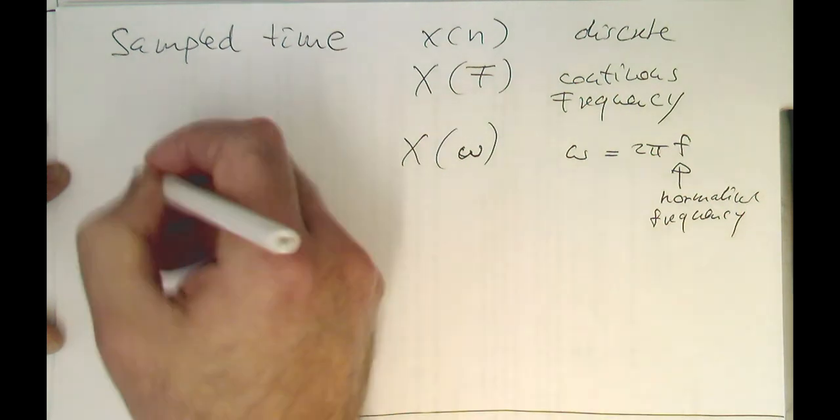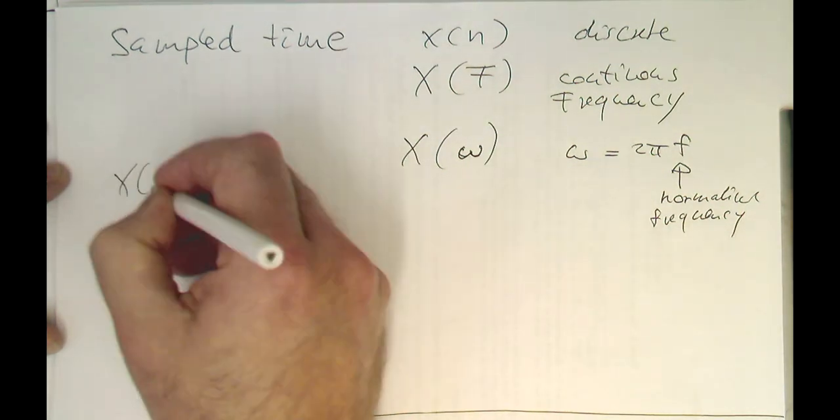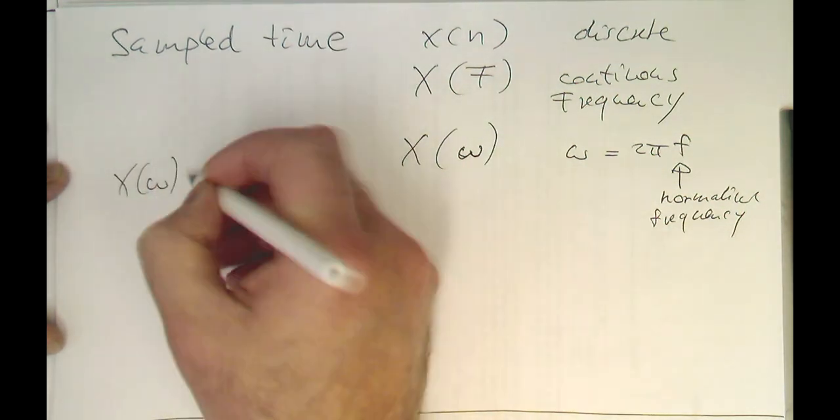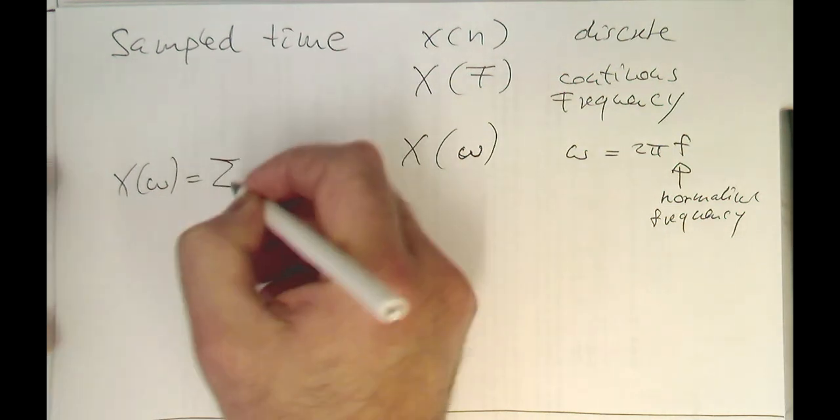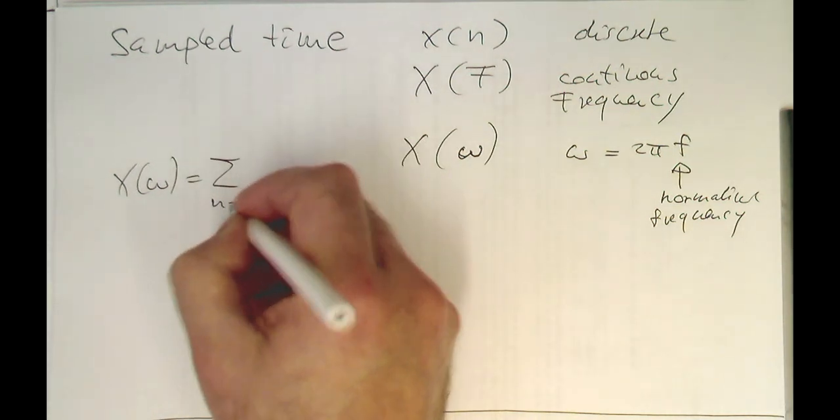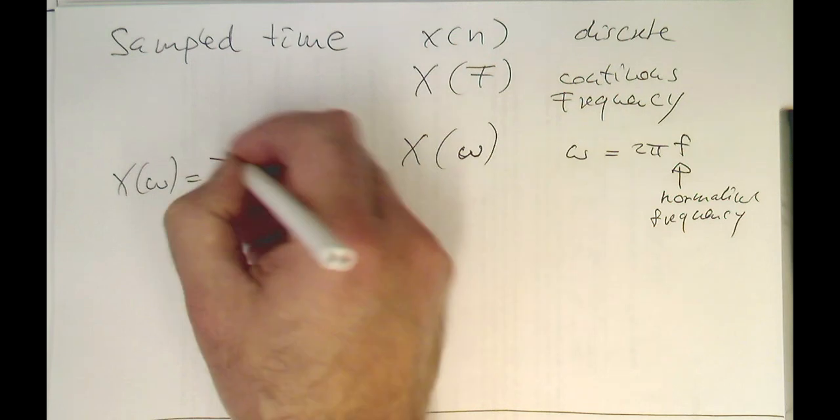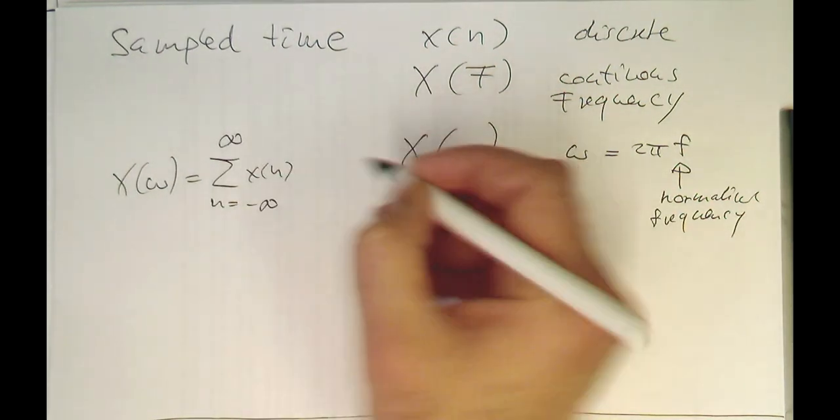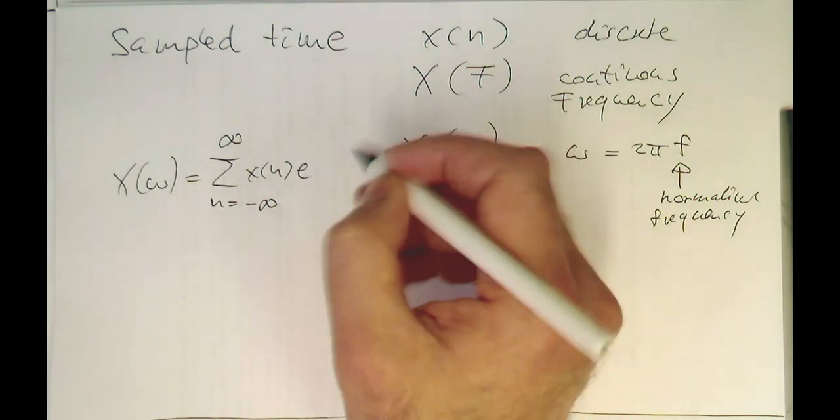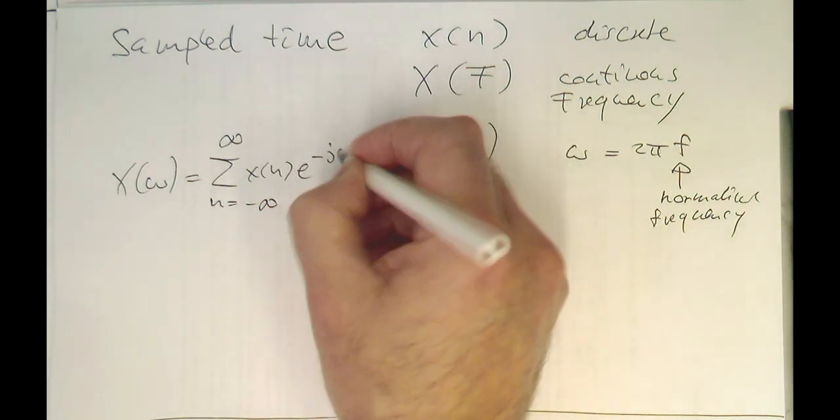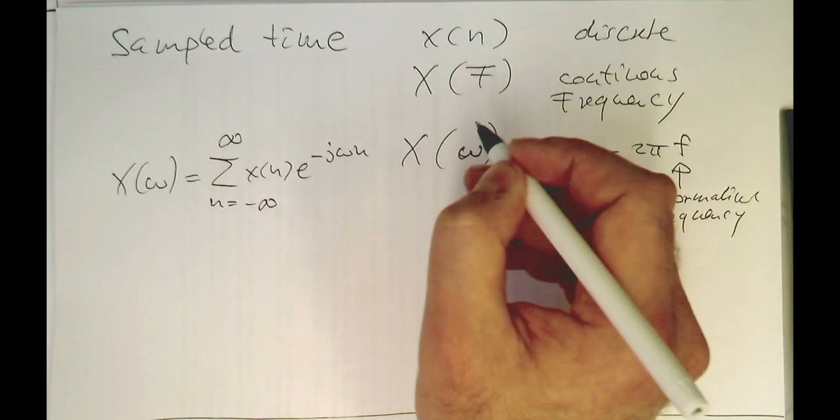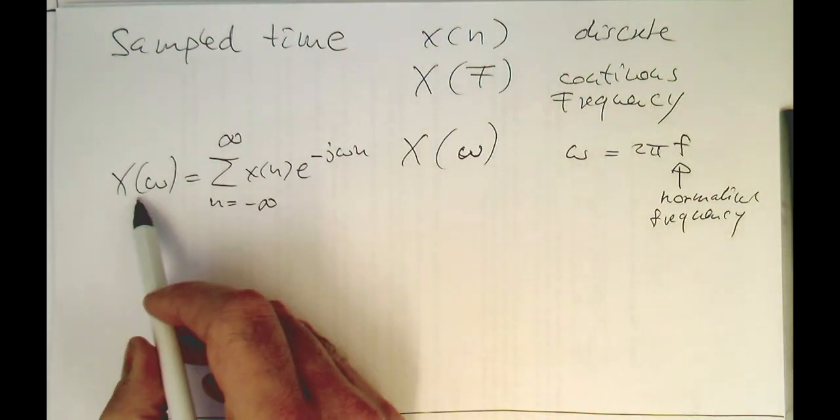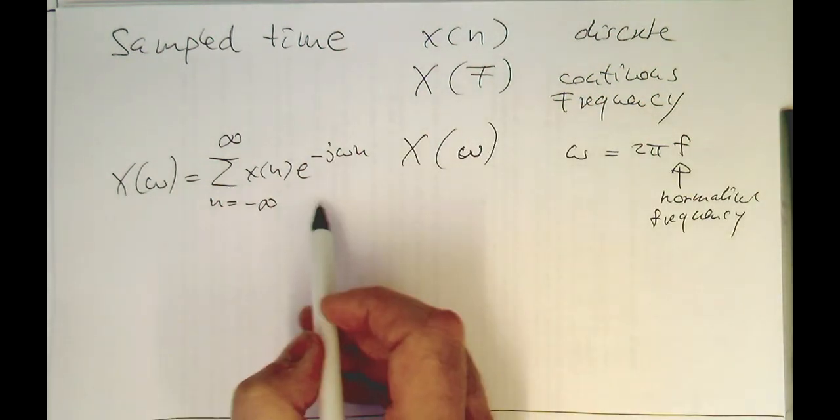Let's write down the formulas for this. So x of omega is then just an integral running now in discrete time, and so we have got the x of n here, and then the typical exponential of the Fourier transform here. So we are just generating our frequencies with this formula.